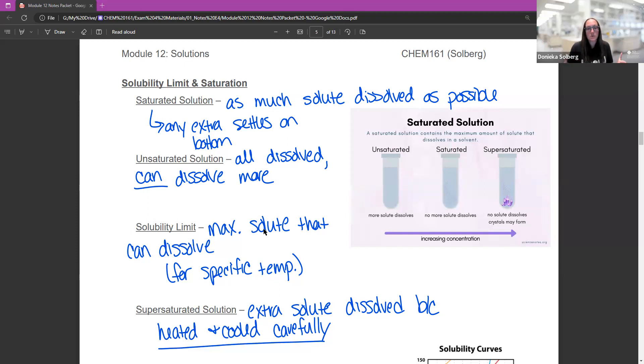Solubility limits do change with temperature. If you think of making sweet tea, if you want to make extra sweet tea, you'll heat it up to get more sugar to dissolve because at higher temperature, sugar is more soluble. So solubility limits depend on temperature.